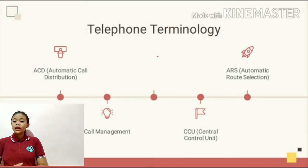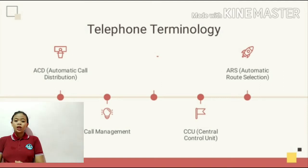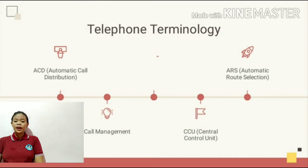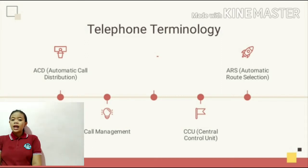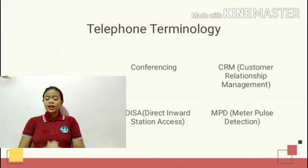ARS is a technique where the telephone system looks at the digits being dialed to make an outside call. The next is Call Management — the use of specialist software to analyze and report on call records which are output from a telephone system and recorded on computer. The next is CCU, or Central Control Unit.